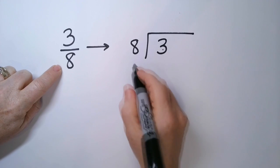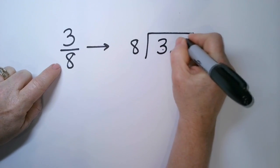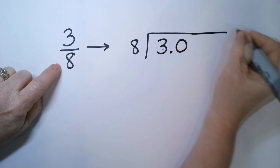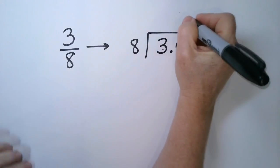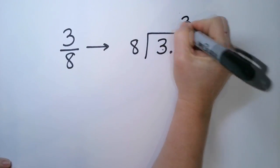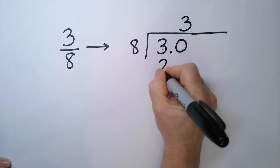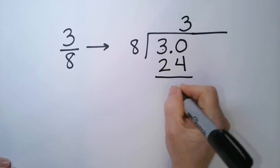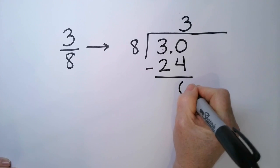So 3, 8 doesn't go into 3, so we put a decimal point here and put a 0. And then 8 goes into 30. It goes in 3 times. 3 times 8 is 24.